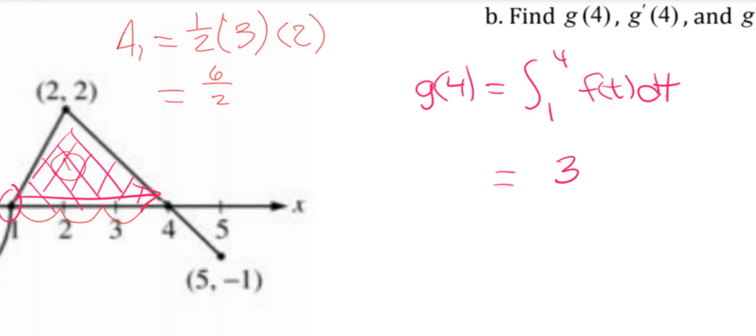Now g prime of 4, this one's going to be a little bit different. So g prime of 4, that's going to make us take the derivative of the integral from 1 to x of f of t dt. So that's just going to be f at 4.